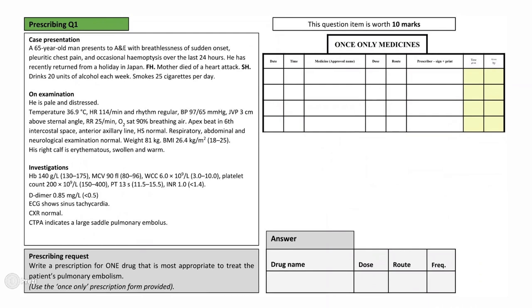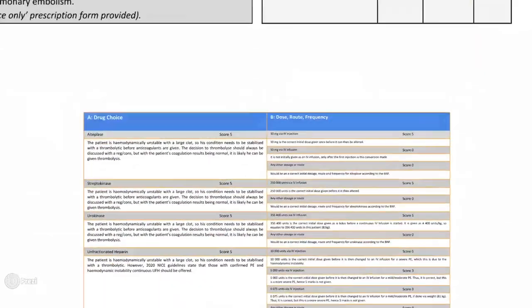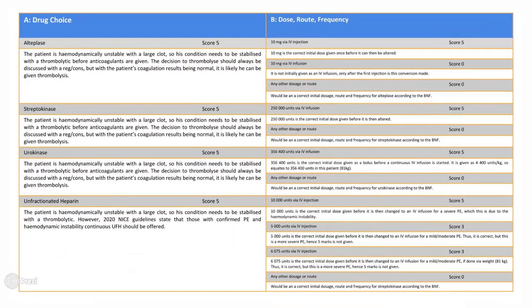However, acceptable answers that would score full marks for this prescription would be unfractionated heparin via IV injection and thrombolytics such as alteplase, streptokinase, or urokinase. Unfractionated heparin is the anticoagulant of choice due to its short half-life, the ease of monitoring, and the fact that it can be readily reversed by protamine. NICE guidelines suggest that it should be offered in all of those with a PE and hemodynamic instability. It is also important to remember that the decision to thrombolyse should always be discussed with a registrar or consultant. Suitable doses and routes for all correct medications are shown on screen along with the marks that they would receive. I hope that this has all made sense and it highlights that there are usually multiple correct answers, but in order to get the full 10 marks, you need to have the correct drug name, dose, route, and frequency.